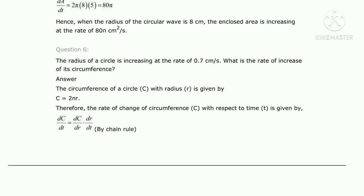We need to find the rate of increase of the circumference of the circle. The formula for circumference is C = 2πr, where C is the circumference and r is the radius. We have to find the rate of increase of the circumference, meaning we differentiate C with respect to time. Since 2π is a constant, dC/dt = 2π · dr/dt.